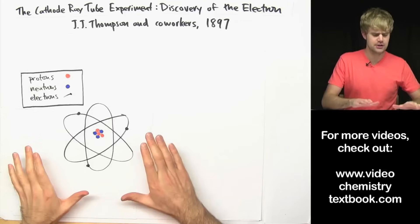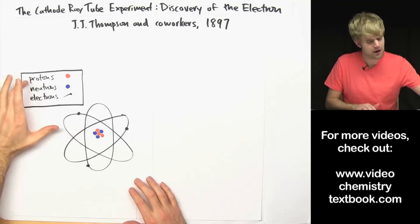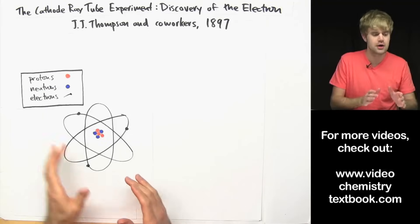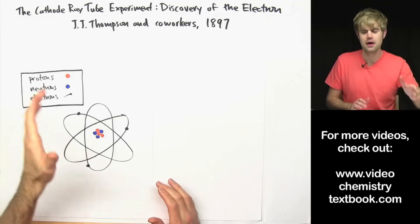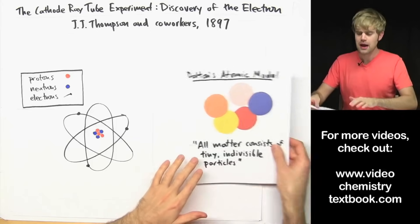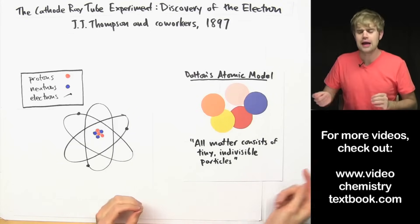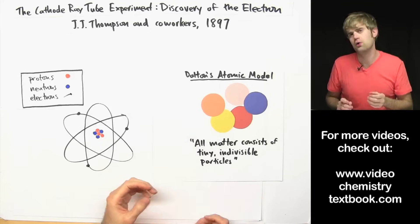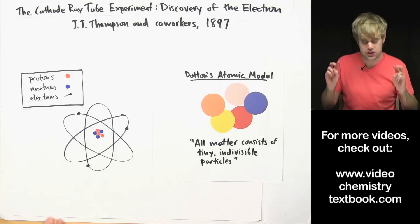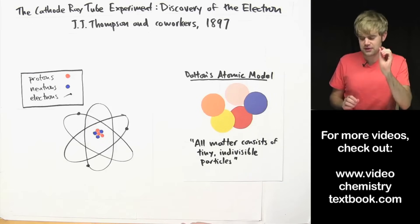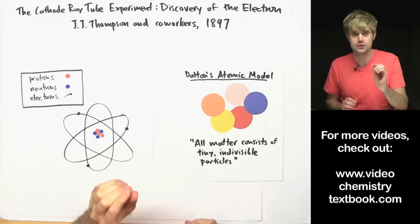So these days we think about atoms kind of like this. They're made up of a variety of smaller subatomic particles. But in the late 1800s it was all about John Dalton's model of the atom. In the early 1800s John Dalton had proposed that all matter, all stuff, was made up of tiny indivisible particles called atoms.